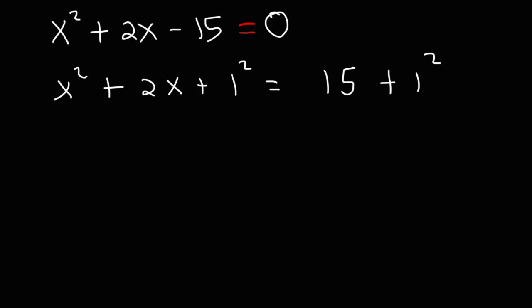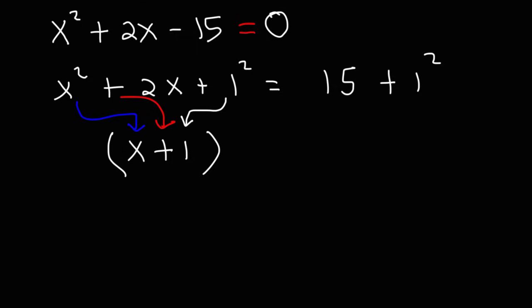Our next step is to factor the trinomial on the left side. Here's a quick shortcut: whatever variable you see here, just write it — so we have an x. And wherever the sign is in front of the middle term, just rewrite it. If you see a plus sign, put a plus; if you see a minus sign, write a minus sign. Whatever number you see before you square it, write it here — the square goes on the outside. So x squared plus 2x plus 1 can be factored as x plus 1 squared, which is the same as x plus 1 times x plus 1. On the right side, we have 15 plus 1, which is 16.